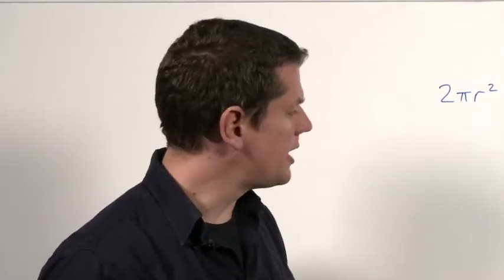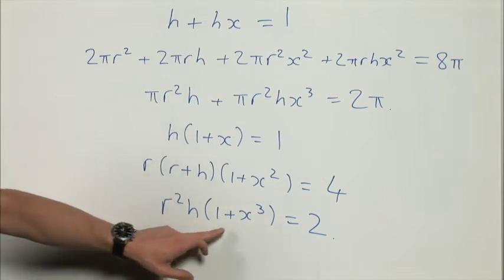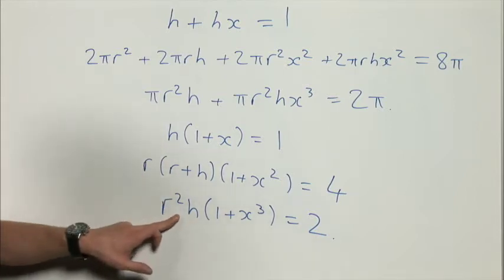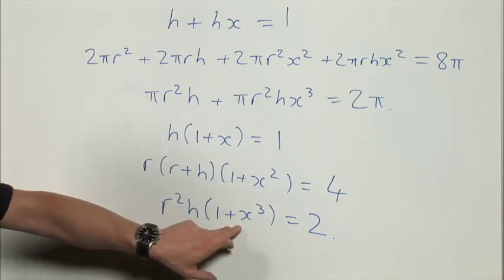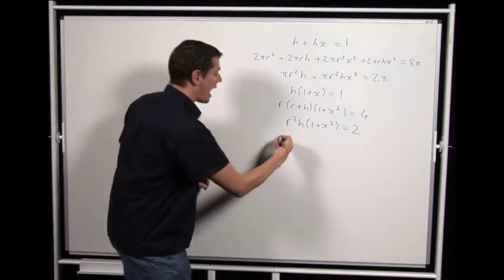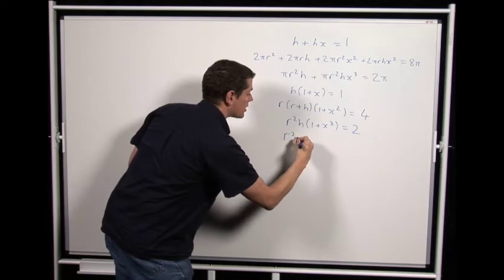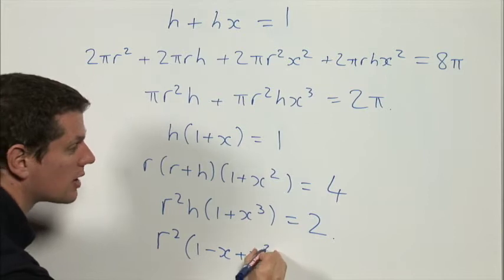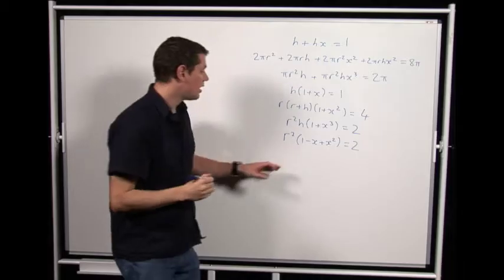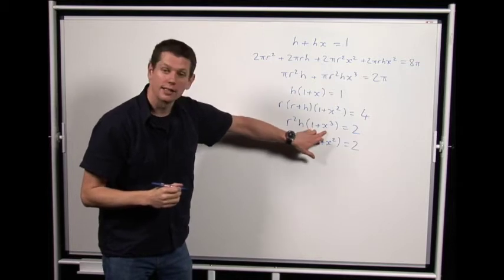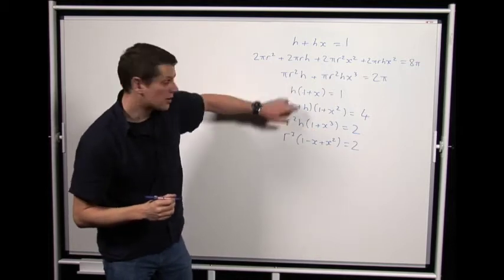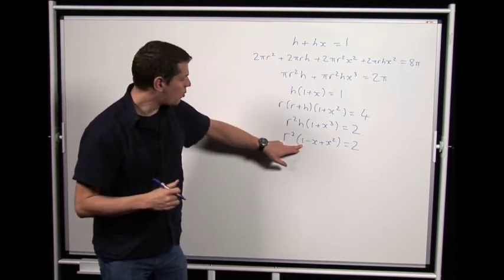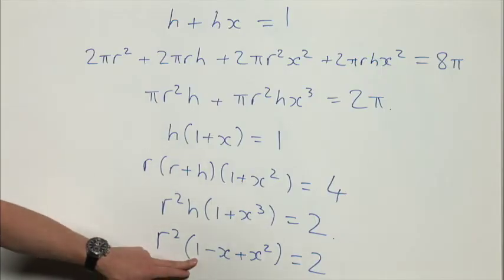Now things will go much easier if I spot that the third equation is a multiple of the first. We have h in both, and I can write 1 + x³ as (1 + x)(1 − x + x²), which gives r²(1 − x + x²) = 2. This depends on knowing the standard factorisation 1 + x³ = (1 + x)(1 − x + x²). It's not very well known, but you can check it for yourself.